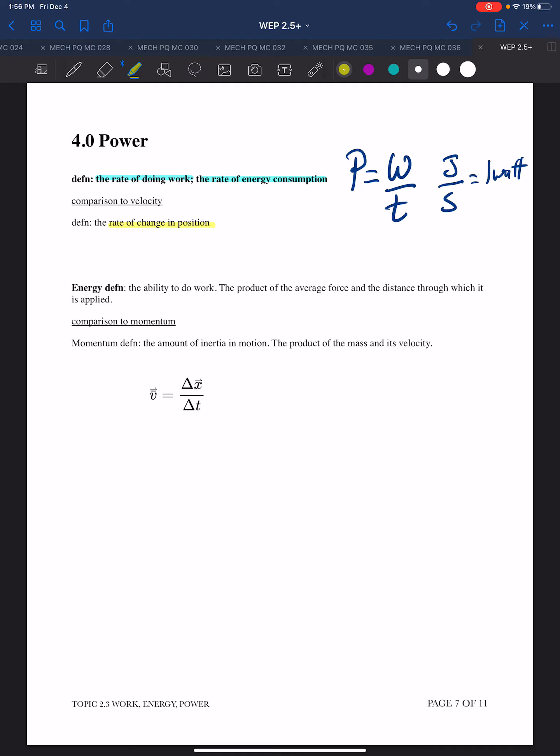Energy is defined as the ability to do work, or the product of the average force and the distance through which it's applied. Well, we can compare that to momentum. Momentum is the amount of inertia in motion. It's the product of mass times velocity.